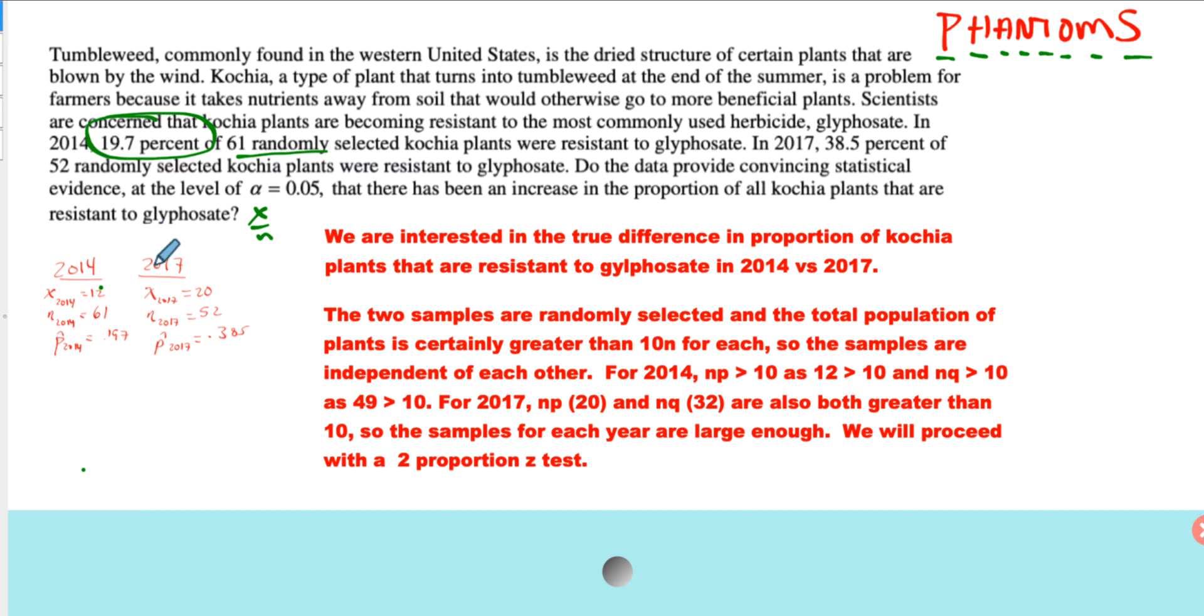Also for 2017, likewise, you get 20 and 52. The p-hat values they give you, that's what the proportion is for each one. So going through PHANTOMS and starting out, the parameter of interest: we're interested in the true difference in the proportions for 2014 versus 2017.